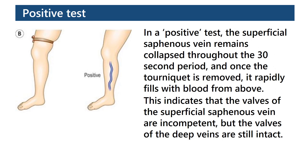In a positive test, the superficial saphenous vein remains collapsed throughout the 30-second period, and once the tourniquet is removed, it rapidly fills with blood from above. This indicates that the valves of the superficial saphenous vein are incompetent, but the valves of the deep veins are still intact.